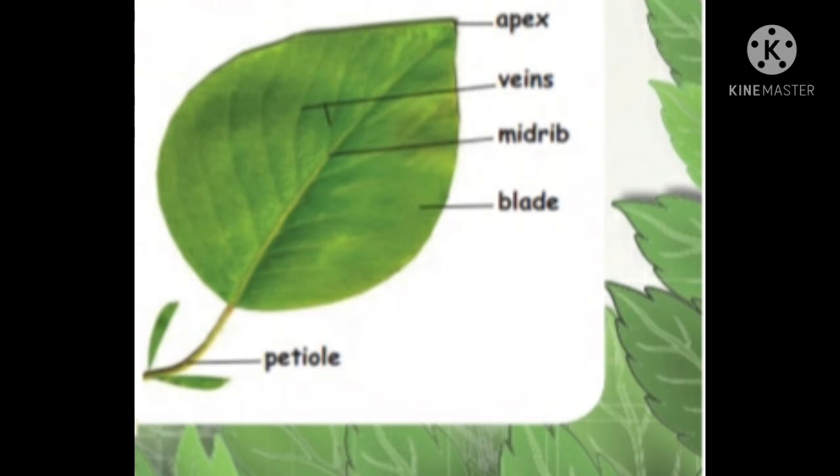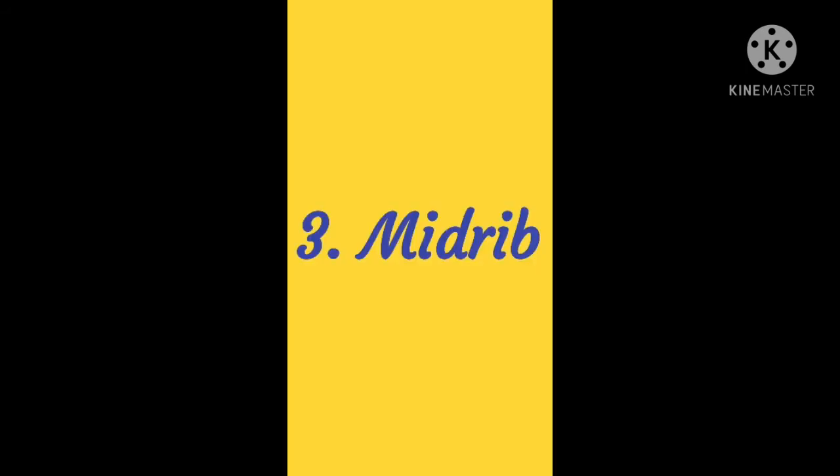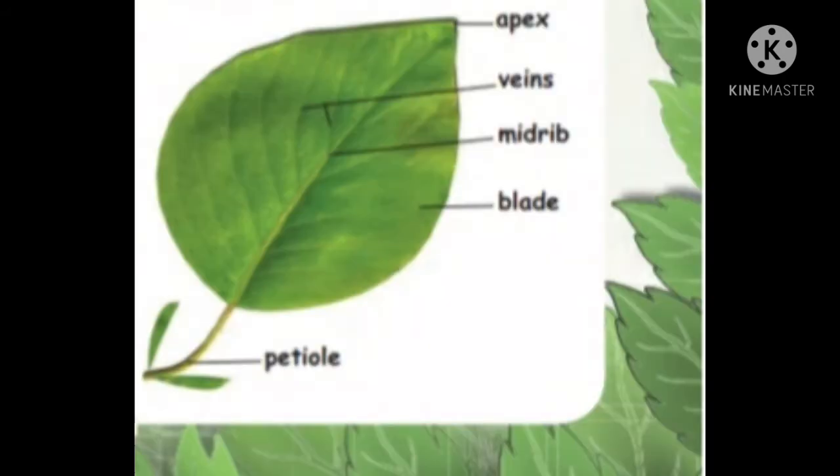Third one: midrib. The midrib runs along the center of the leaf.